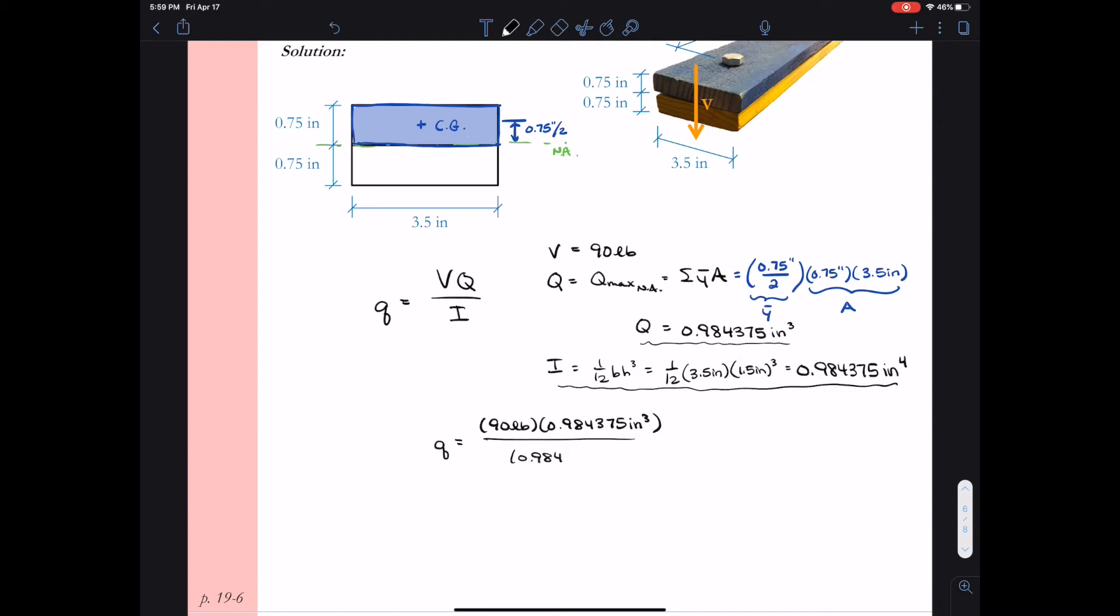So finally, little q, we can go through the calculations. We plug in VQ over I. I is inches to the fourth. Q is inches cubed. So that leaves us an inch on the bottom. So now we'll have little q as 90 pounds per inch.